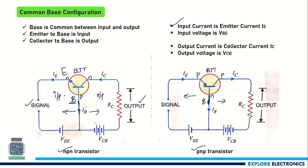The junction here is the emitter-to-base junction, and the voltage between the emitter-base junction is called the input voltage, that is VBE. We need to forward bias the emitter-base junction and reverse bias the collector-base junction — that is the biasing rule for BJT.